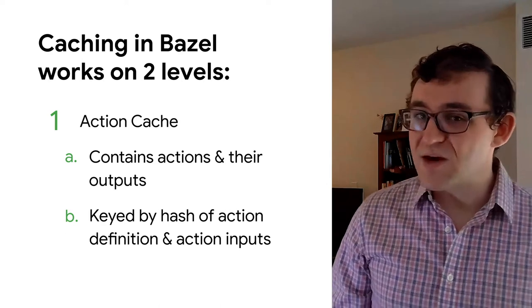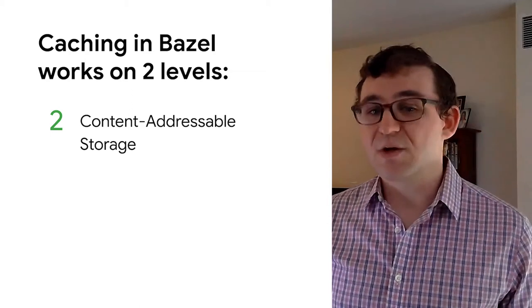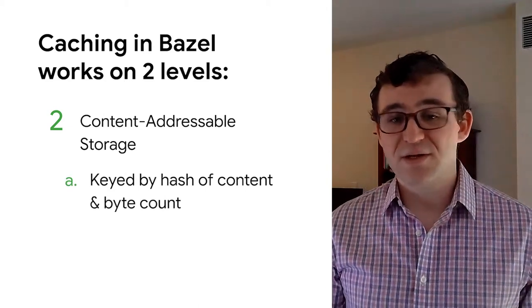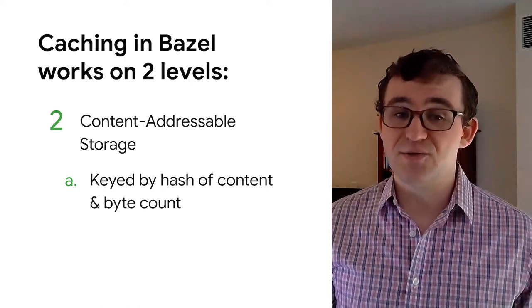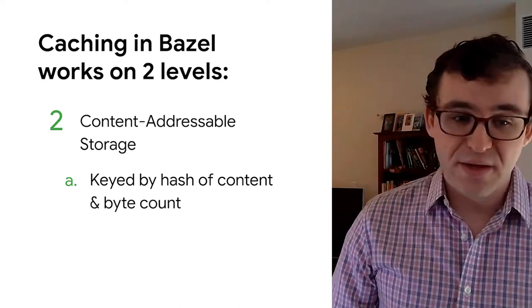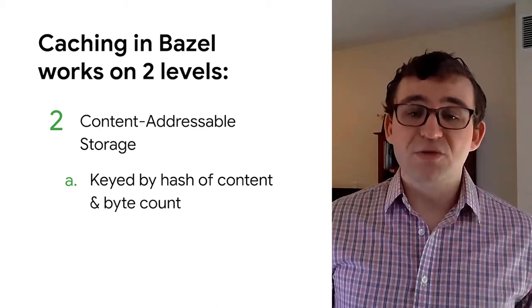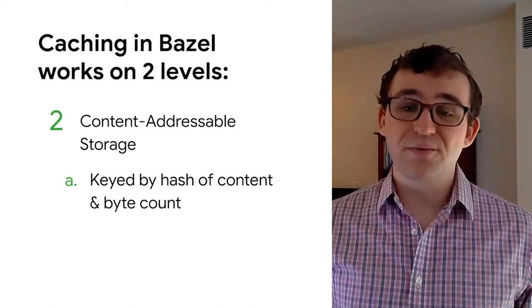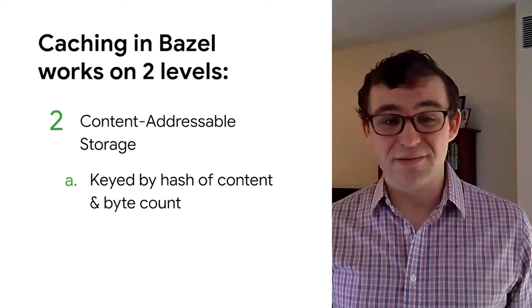Where do you look those outputs up? In the content addressable storage. The CAS is much simpler. It's called content addressable because the cache key for each object is derived solely from its content. This helps make it resilient to hash collisions, and it also makes integrity verification really easy. Another benefit is that if the same file shows up multiple times in your build, it can share a cache entry. One place where this comes up really frequently is with the empty file — it turns out that file is everywhere in everyone's builds.